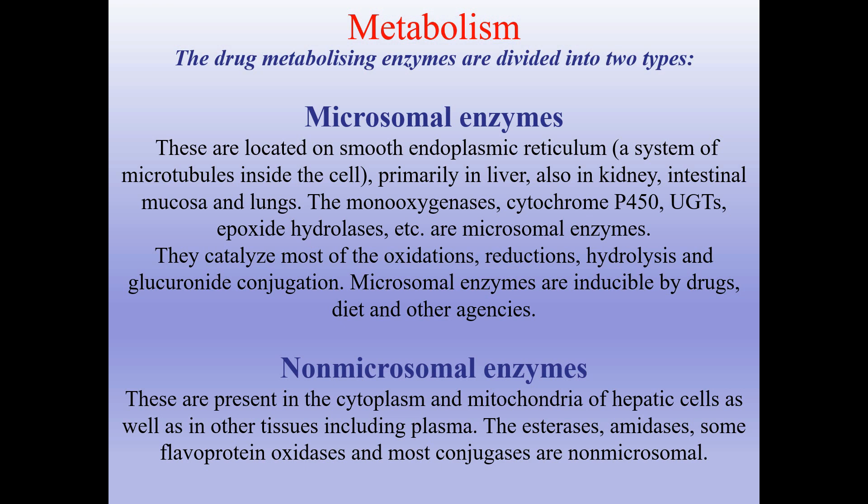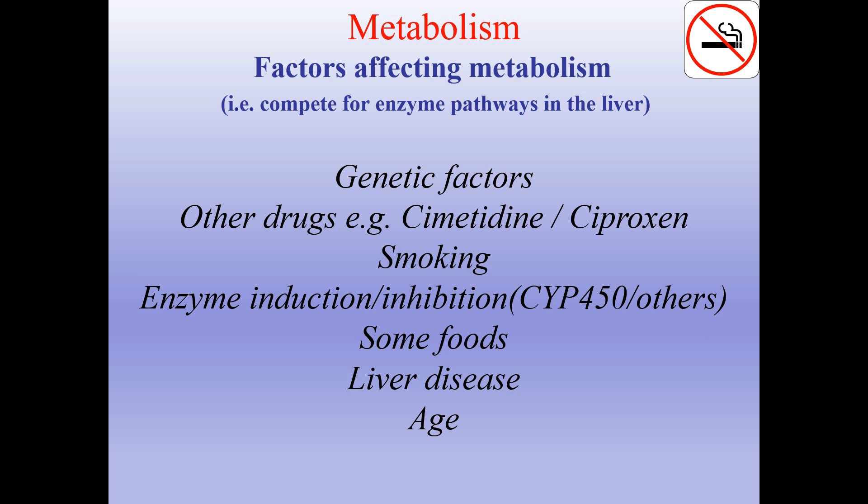Drug metabolizing enzymes are divided into two types. Microsomal enzymes are located on the smooth endoplasmic reticulum, primarily in the liver, also in kidney, intestinal mucosa and lungs. These include monooxygenases, cytochrome P450, UGTs, epoxide hydrolase, etc. They catalyze most oxidations, reductions, hydrolysis and glucuronide conjugation, and are inducible by drugs, diet and other agents. Non-microsomal enzymes are present in the cytoplasm and mitochondria of hepatic cells as well as in other tissues including plasma; these include esterases, amidases, and most conjugases. Factors affecting metabolism include genetic factors, other drugs such as cimetidine and ciprofloxacin, smoking, enzyme induction or inhibition, some foods, liver disease, and age.